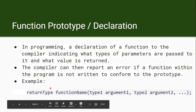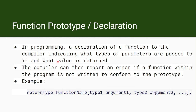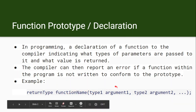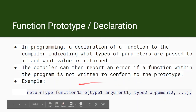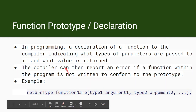The function prototype tells the compiler that a function exists by this name, with arguments of specific types, and will return the specified return type. The compiler can then report an error if a function in the program does not conform to the prototype — for example, if you call with float instead of int, or string instead of char, any mismatch in the type or number of arguments will be flagged as an error.